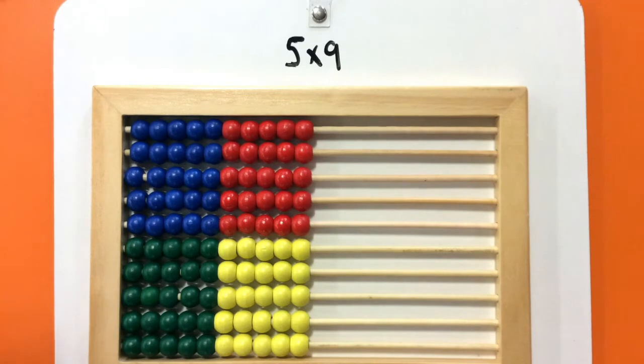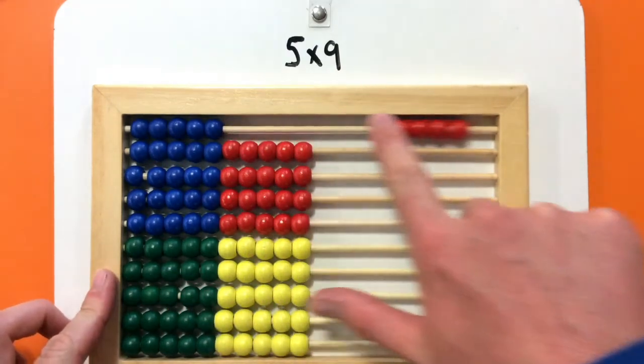Our first problem today is 5 times 9. We can use the abacus to do this by just counting in 5. So, 5,